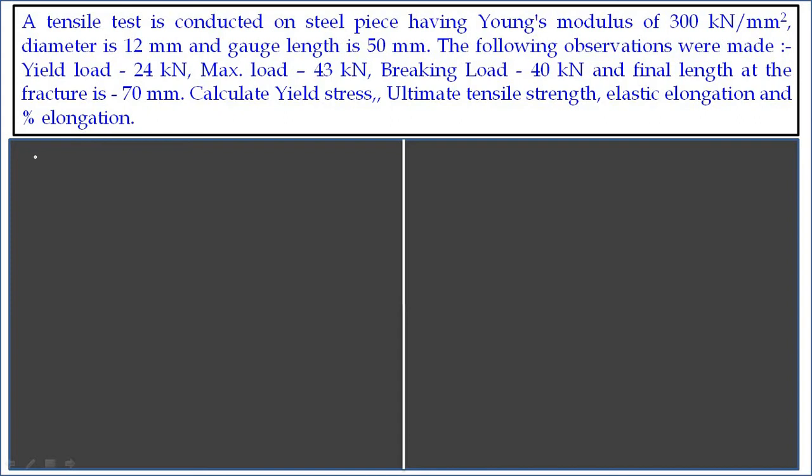Let us note down what data is given in the problem. Number one, there is information given that the material is having a Young's modulus of 300 kN, which means 10 raise to 3 N per mm square. Further it is said the diameter of the test specimen, the original diameter, is equal to 12 mm.